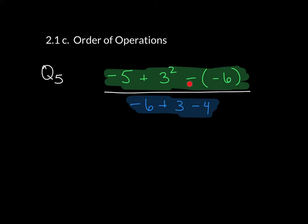what is the opposite of a negative? That becomes a positive. So my numerator just becomes negative 5 plus 3 squared, which is 9, plus 6.